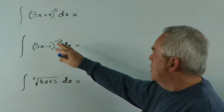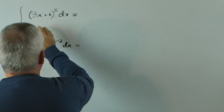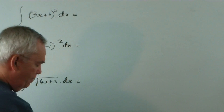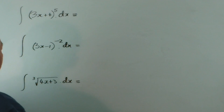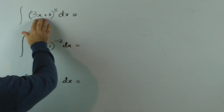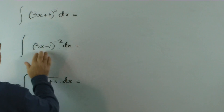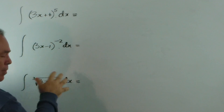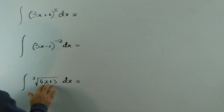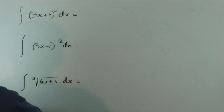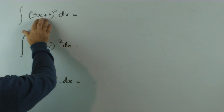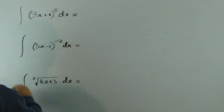So if you imagine this is the result of differentiating something, we're going to integrate it. The pattern is that we have a function to a power — and we always need the derivative of the function out the front.